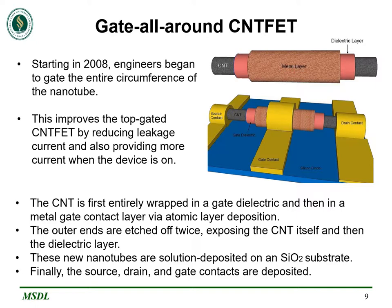In 2008, they were able to come up with the idea of gating the entire carbon nanotube by first wrapping a gate dielectric around the entire nanotube and then wrapping a metal contact layer on top of that using atomic layer deposition. They etch off the ends so that it looks like the top figure, and then solution-deposit the nanotube on a silicon dioxide substrate. After that, they complete the process by depositing the source, drain, and gate contacts so that we now have a product that looks like the bottom figure. The gate-all-around CNT-FET is better than the top-gated version because there is less leakage current and also a higher on current.